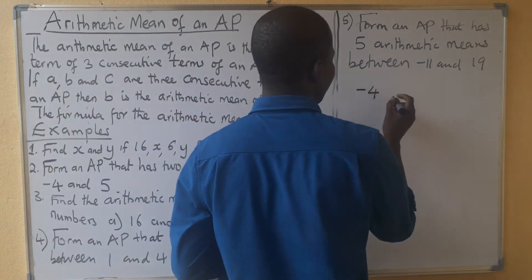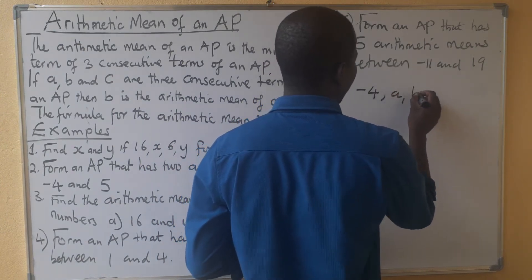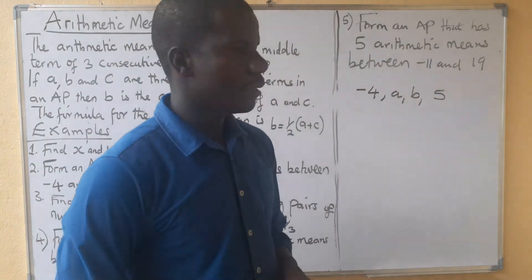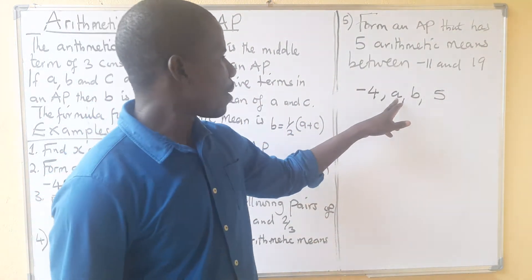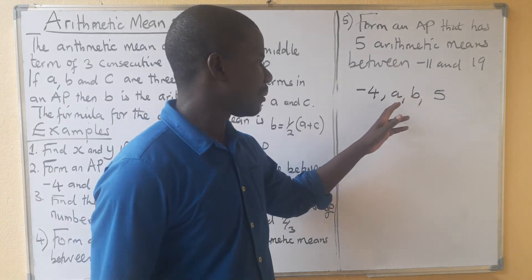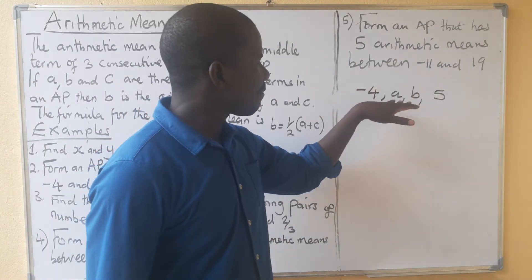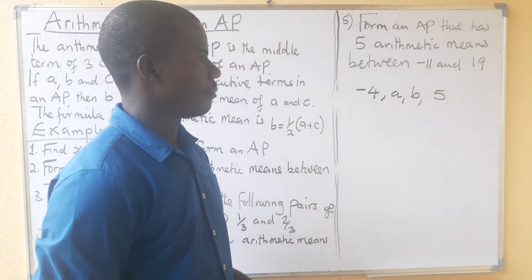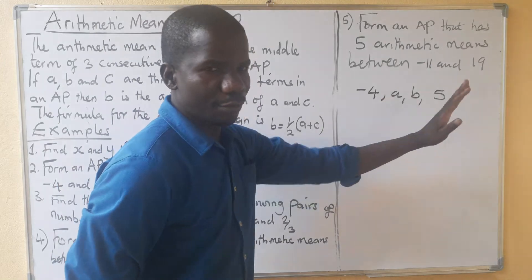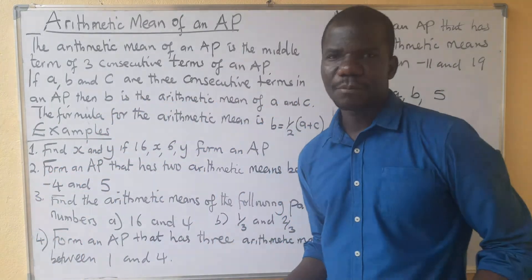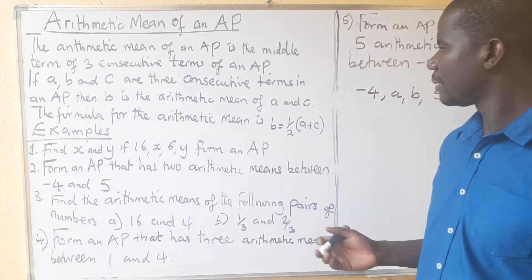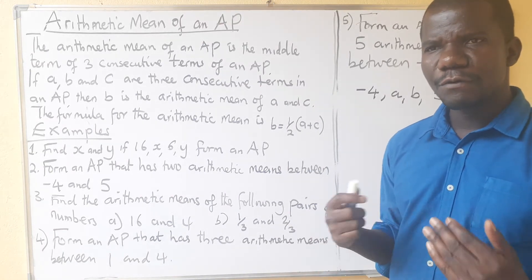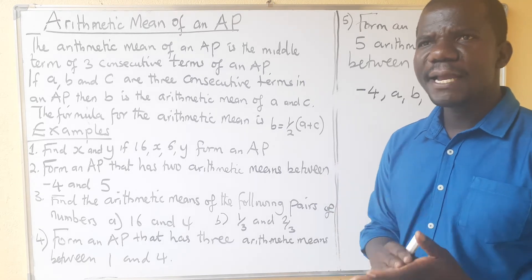Negative 4 is the first term and 5 is the last term, with A and B as the two means in between. If they said seven arithmetic means, we would have seven letters in between. In this case, I suggest we use the nth term formula to find the common difference.